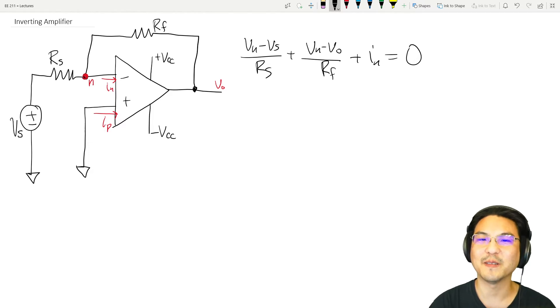Now what were the idealizations for an ideal op-amp? The voltage here is the same as the voltage here: VN equals VP. That's for an ideal op-amp. Notice that here we tied that directly to the ground, so this is zero, which means VN is zero.